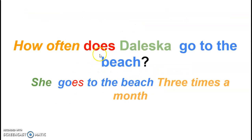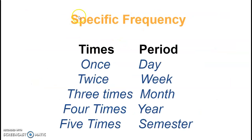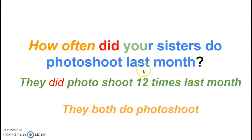Now the third person: 'How often does Lesca go to the beach?' She goes to the beach three times a month — or with general frequency: 'She often goes to the beach, three times a month.' And for the past: 'How often did your sister do a photo shoot last month? They did a photo shoot 12 times last month.' Because this is asking about the past, you don't use general frequency — just say 'they did a photo shoot 12 times last month.'